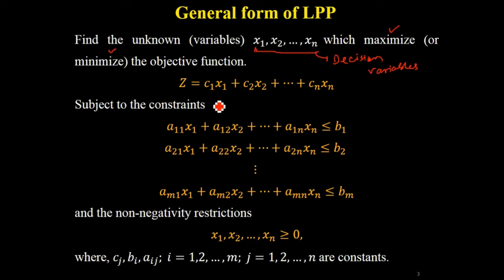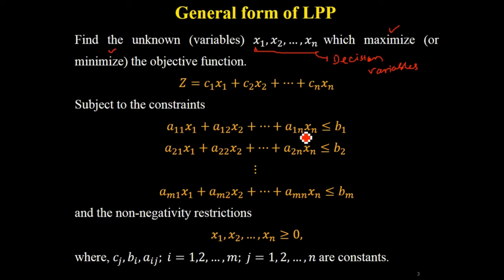Subject to the constraints - you have to see how many constraints there are: 1, 2, up to m, because the first number you see is a11, second equation a21, third, fourth, and the last one is am1. How many variables are there? x1, x2 up to xn. So here we can say n variables and m number of constraints.